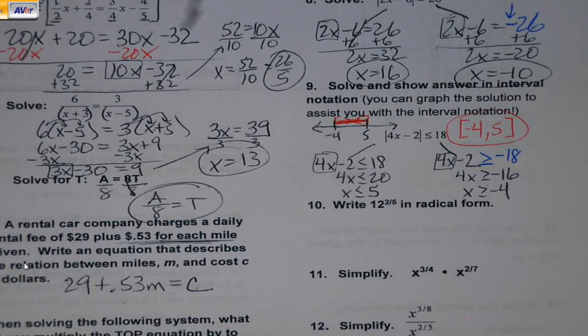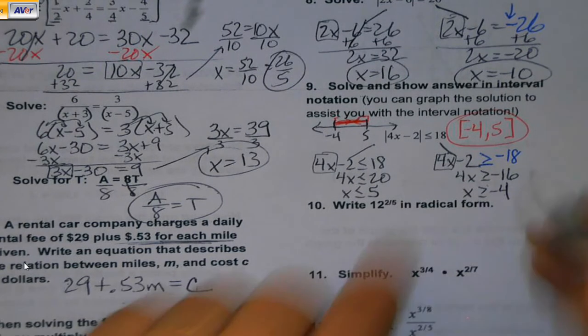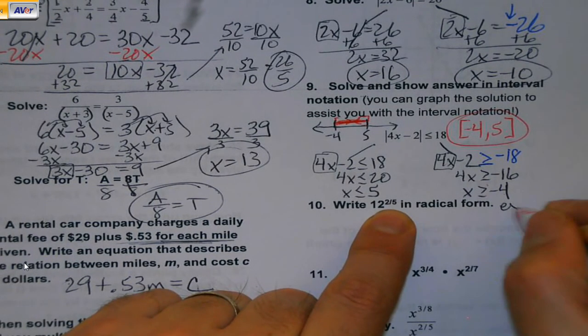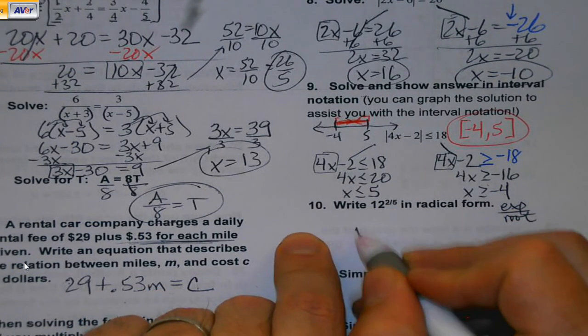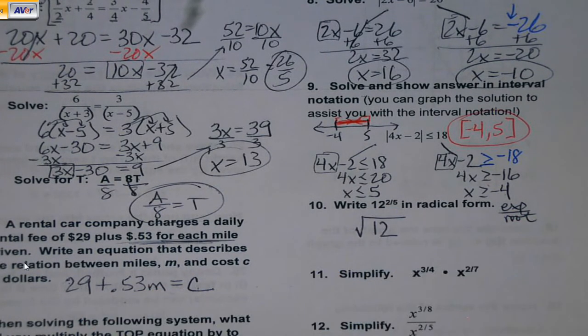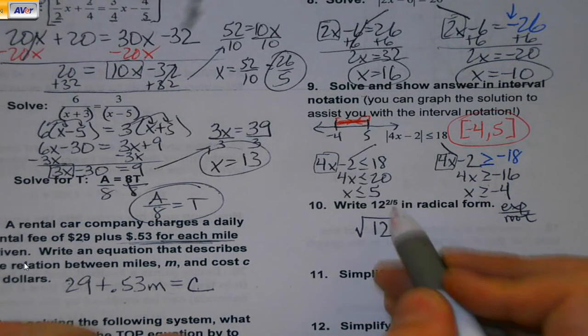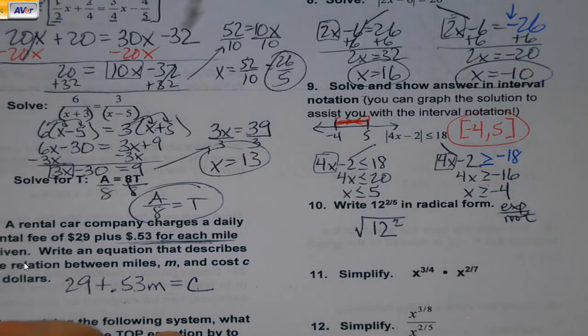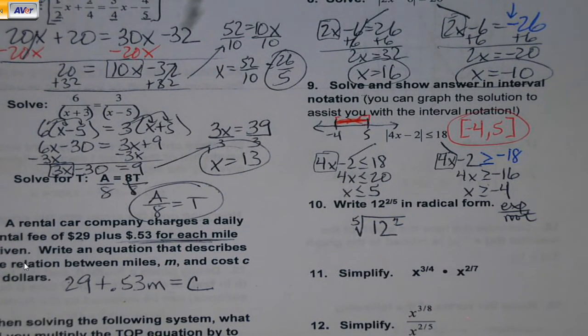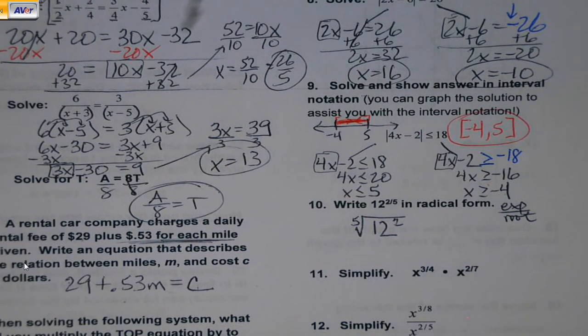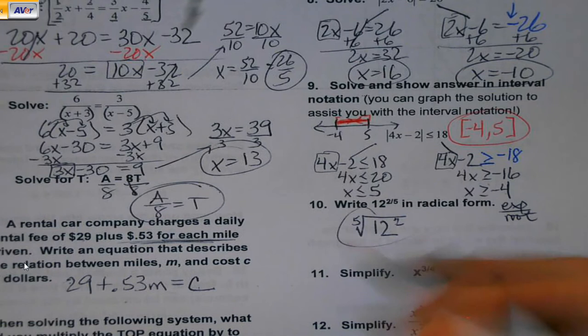Write 12 to the 2 fifths in radical form. Remember, when you're looking at your exponent, it's exponent over root. So there's my radical and my base of 12. There's my exponent. There's my root. I won't guarantee it. That may be the way it looks, or it may end up multiplying this out. But I think that's the way this is going to work out.